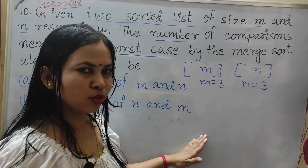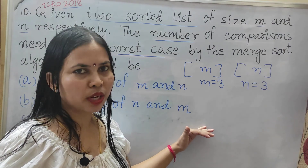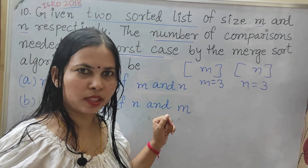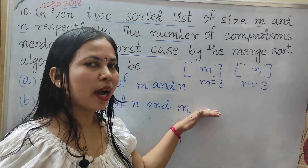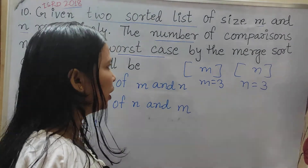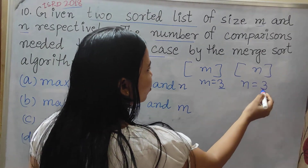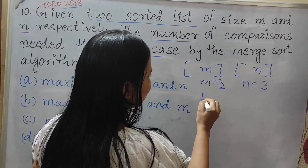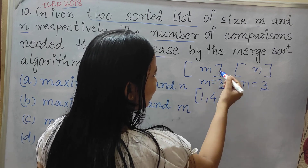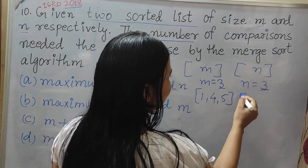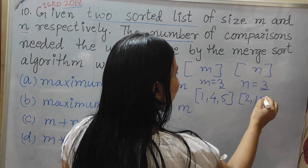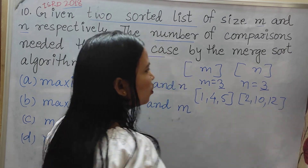If you don't know the merge sort algorithm, then go to that video where I have explained everything through gate questions. Now, for M equal to 3 I am taking elements 1, 4, 5. And for N equal to 3 I am taking numbers 2, 10, 12.